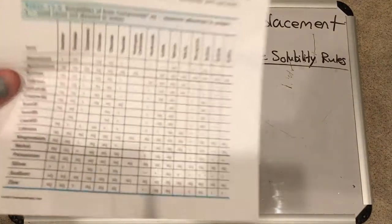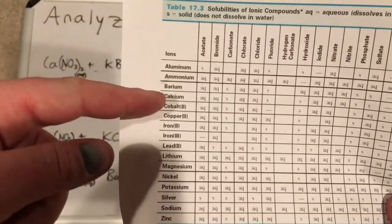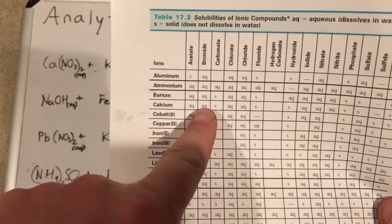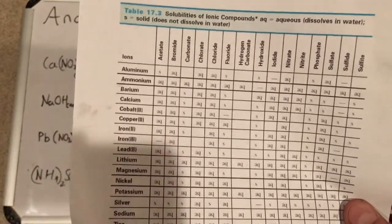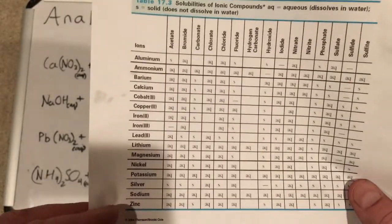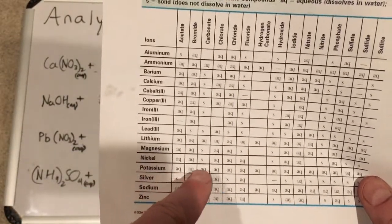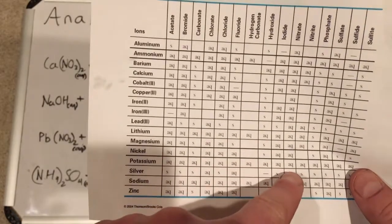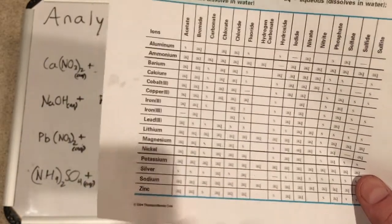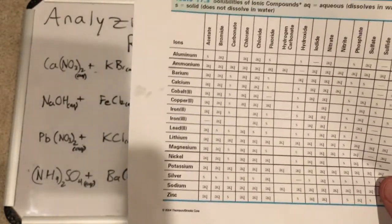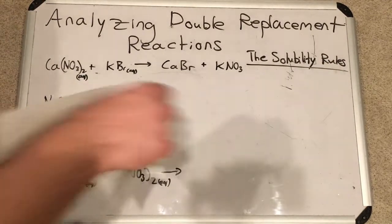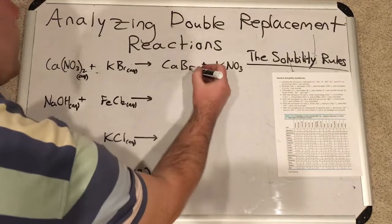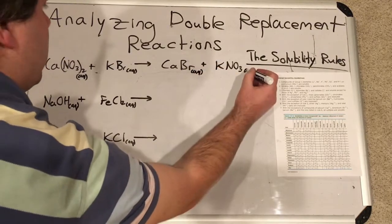We have to look at the solubility chart. Finding calcium bromide: here's calcium, you go two over to bromide — you can see it's aqueous, so calcium bromide is soluble. The other one is potassium nitrate. Potassium, way down here, you go over to nitrate — that's also soluble. So generally this reaction wouldn't necessarily occur, but we're going to assume it does here just for the sake of balancing and getting some practice.